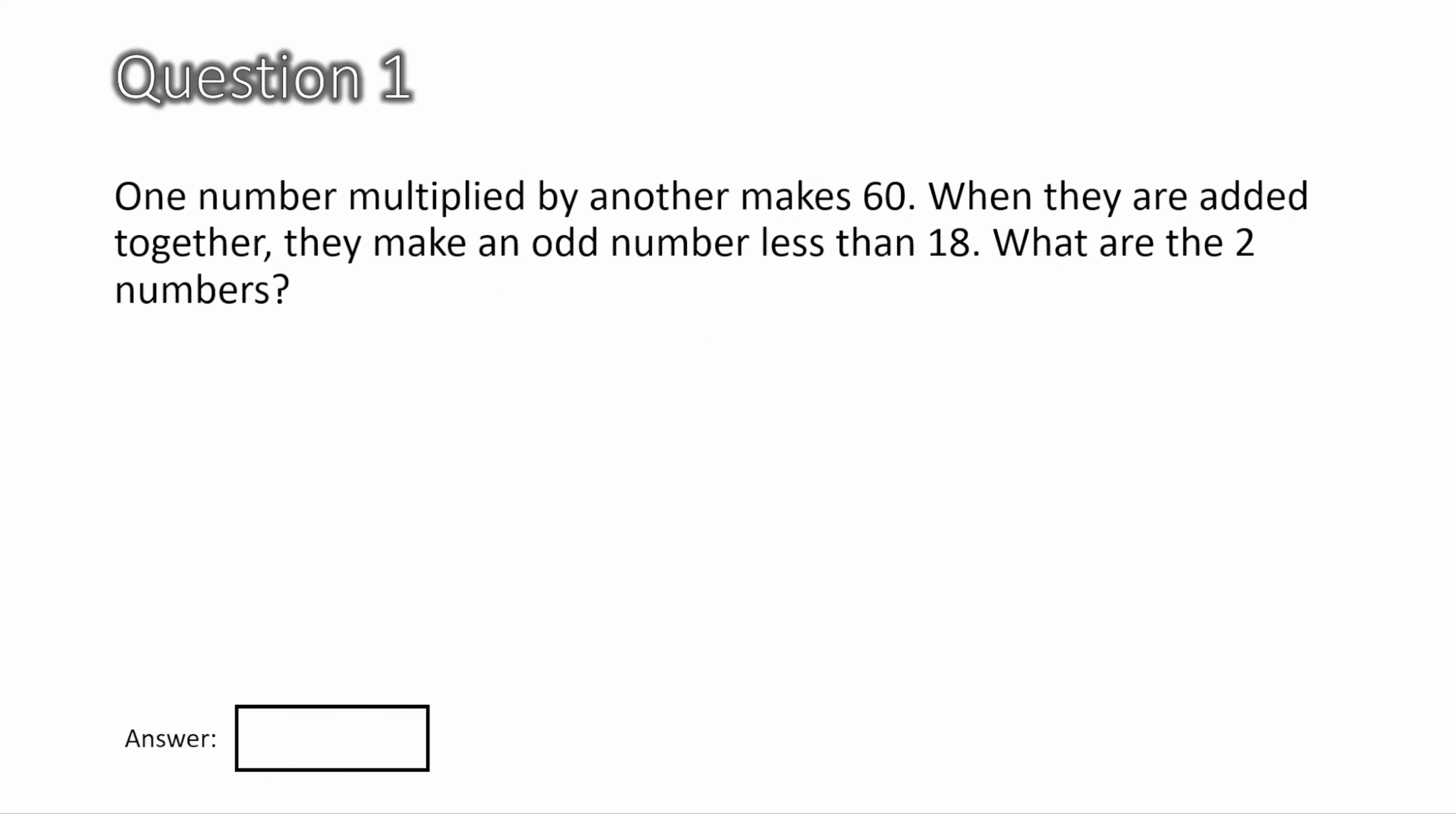Question 1. One number multiplied by another makes 60. When they are added, do they make an odd number less than 18? What are the two numbers? Okay, let's look at the first part of the question. One number multiplied by another makes 60. This is asking us for the factors of 60. The factors are two numbers that when you multiply them, they make that number, in this case 60. So an example would be 1 and 60, because when you multiply them, they make 60. Another one would be 2 and 30. Let's write out all the factors.